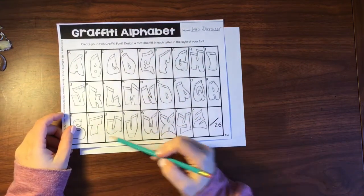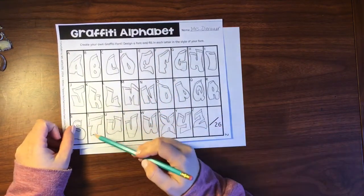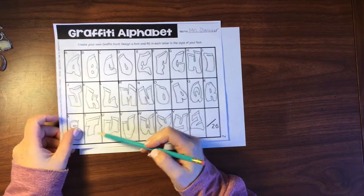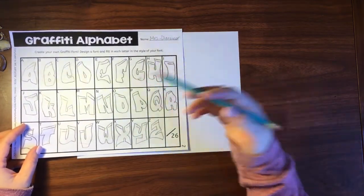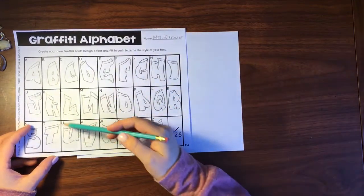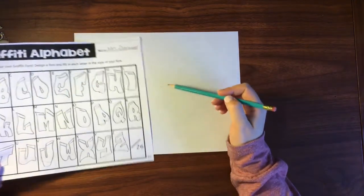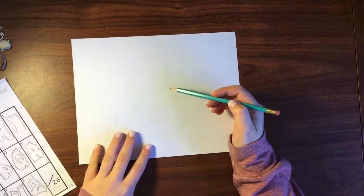I'm going to be looking at my alphabet here and trying to kind of copy what I have here for my letters onto this. Now if I don't copy them perfectly that's absolutely fine, but just so I have an idea of kind of my style of font as I am using it in my word.